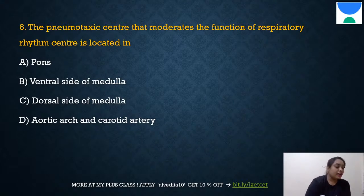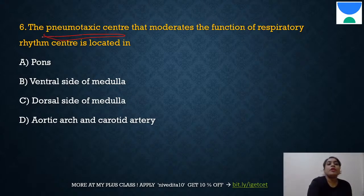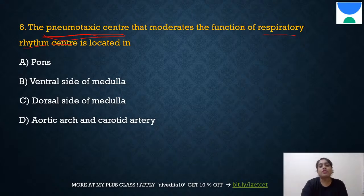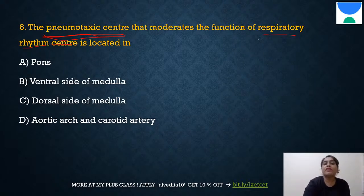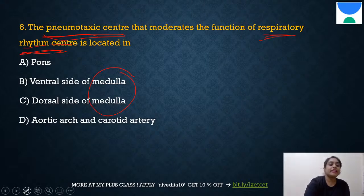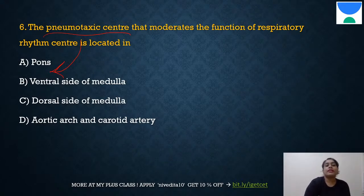Question 6: The pneumotaxic center that moderates the function of the respiratory rhythm center is located in — the answer is A: pons. Be careful not to confuse this with the respiratory rhythm center, which is in the medulla. The question specifically asks about the pneumotaxic center, which is in the pons.